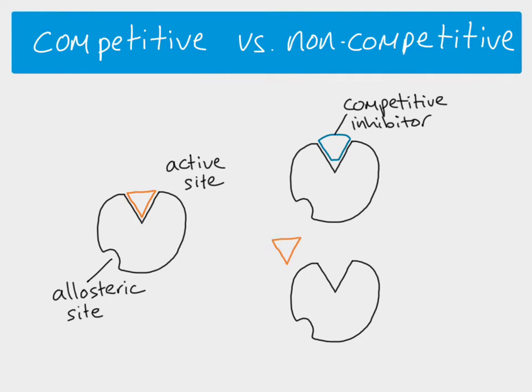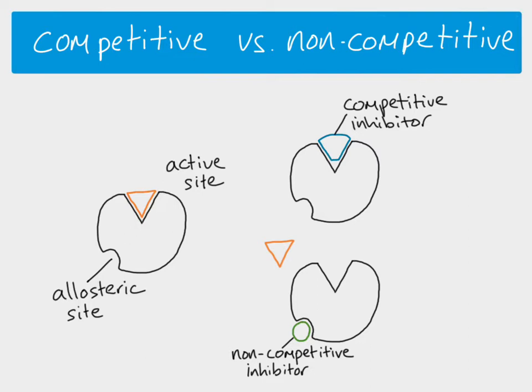A non-competitive inhibitor, however, binds to the allosteric site. Normally we would expect the substrate to be able to go into the active site and bind, but when a non-competitive inhibitor is bound to the allosteric site, it causes a change in the shape of the active site - it just distorts the protein molecule slightly - and when that happens, the substrate is not able to bind.